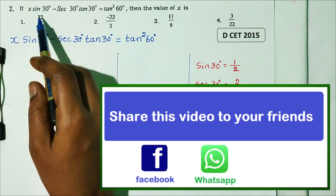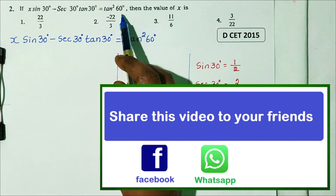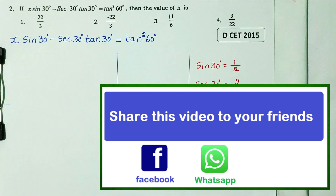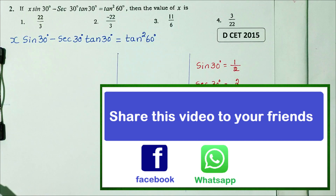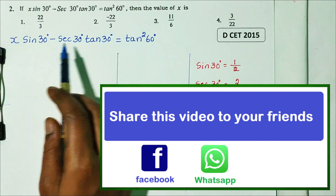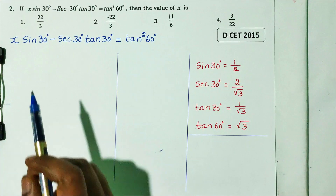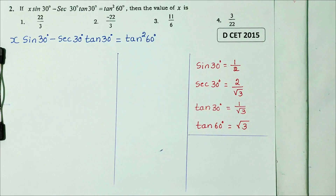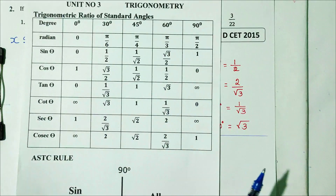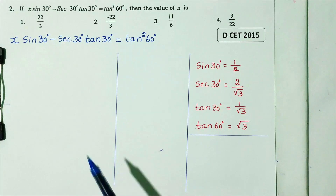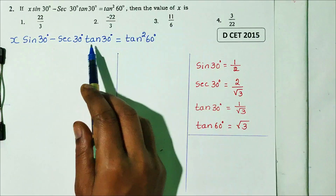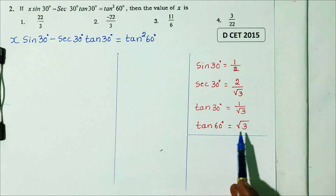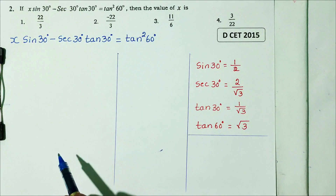Question number 2: if x·sin30 minus sec30·tan30 equals tan²60, then the value of x is? This is from DCT 2015. We use standard values: sin30 = 1/2, sec30 = 2/√3, tan30 = 1/√3, tan60 = √3.